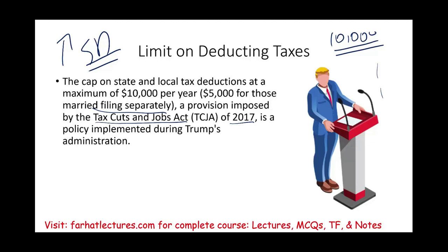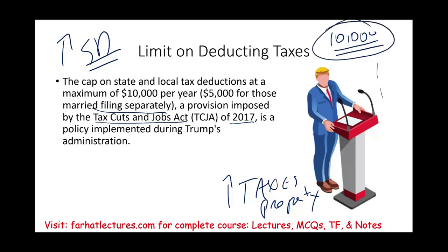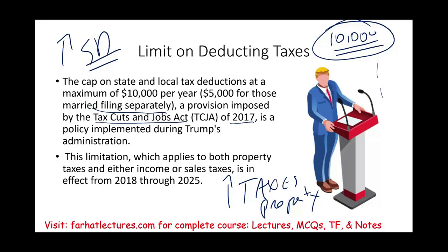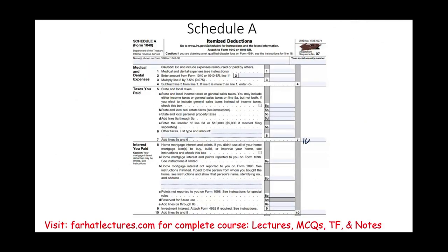Another understanding of the $10,000 cap is that it was to penalize certain states — specifically higher-tax Democratic states like New Jersey and New York, where property taxes are high. If you own a home there, you pay a lot of taxes, but now the maximum you can deduct is $10,000. So simply put, you can deduct up to $10,000 — that is the limit.